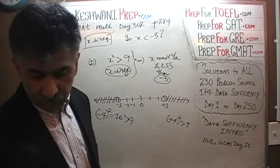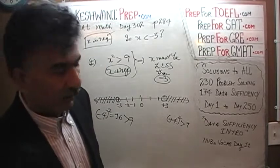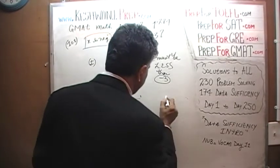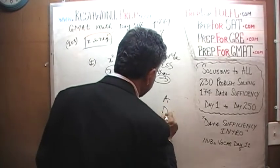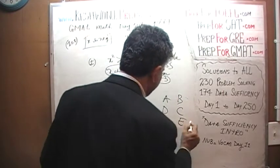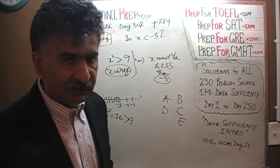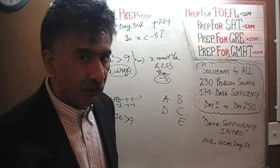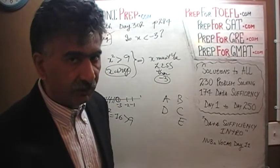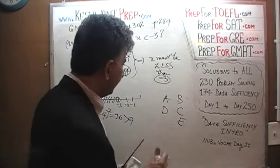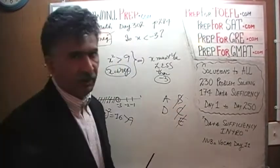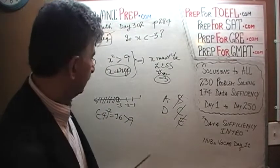The first statement by itself is sufficient. Looking at the answer choices A, D, B, C, E — now that we have established the first statement by itself is sufficient, the answer cannot be B, C, or E. It would have to be either A or D. Let's look at the second statement.